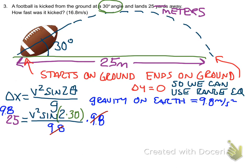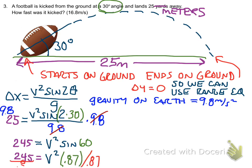So we want to get rid of that 9.8 by multiplying both sides by 9.8, and we get 245 equals v squared sine 60. The sine of 60 is 0.87. And again, we'll get rid of that by dividing each side by the 0.87, and we get that 282 is v squared.